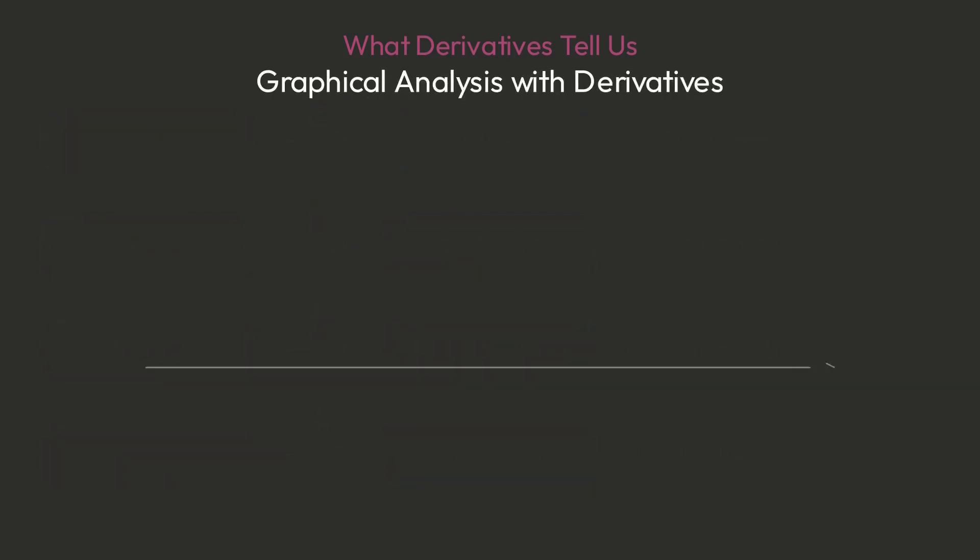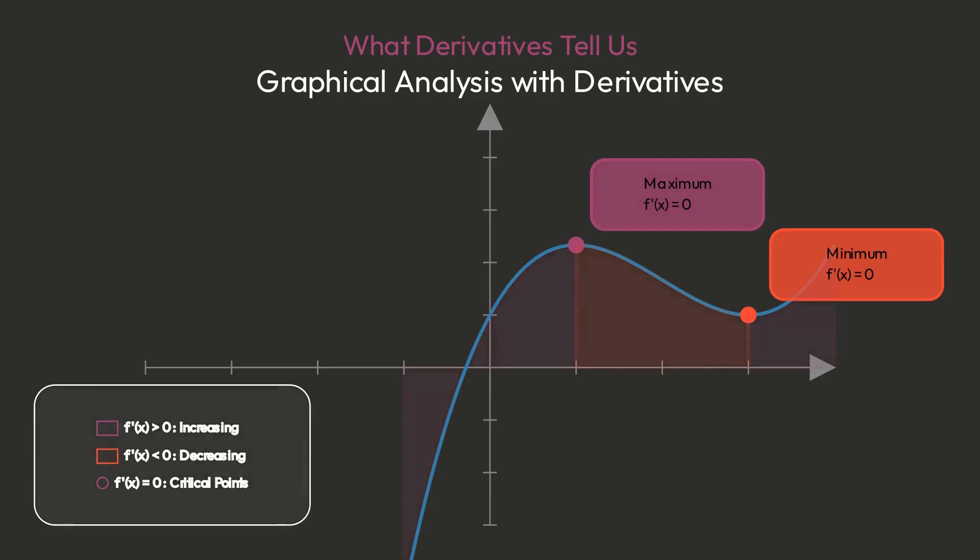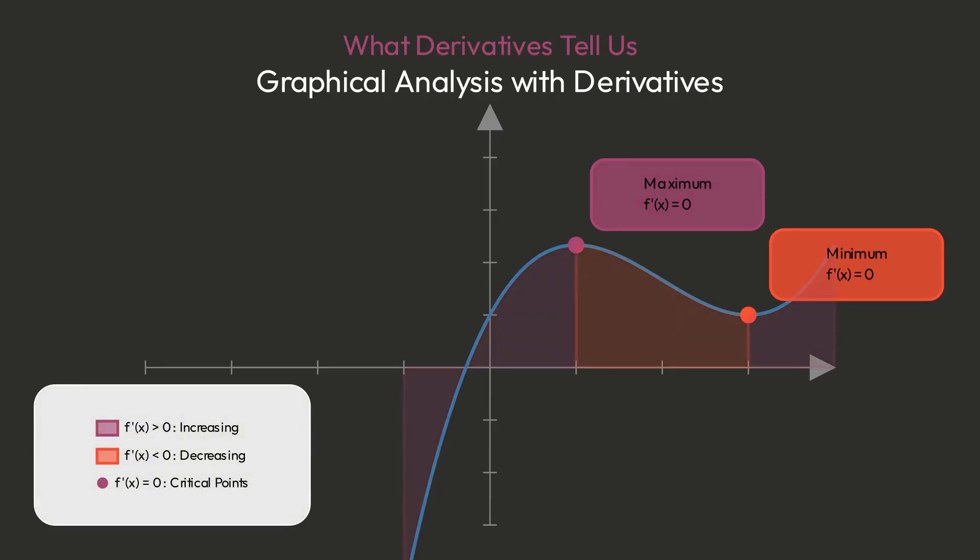Derivatives also reveal a function's behavior. Where f prime of x is positive, the function increases. Where f prime of x is negative, the function decreases. Where f prime of x equals zero, we find critical points: potential maxima and minima.